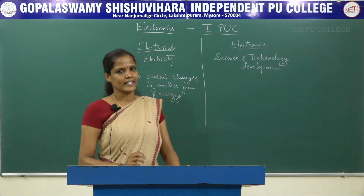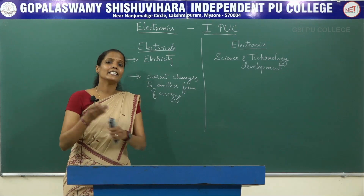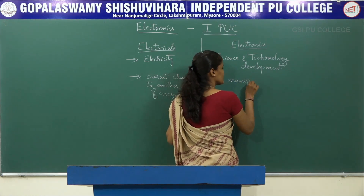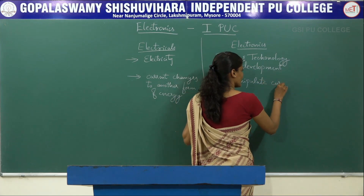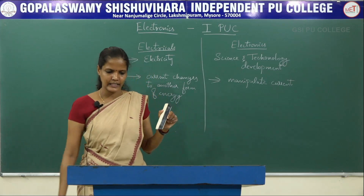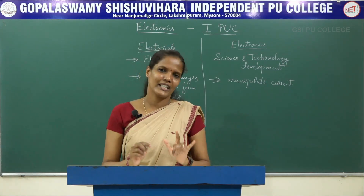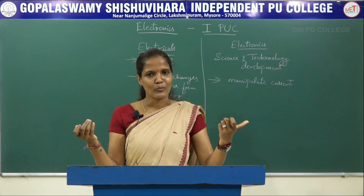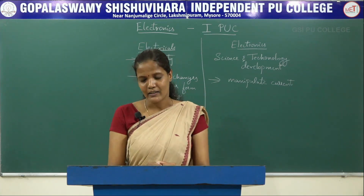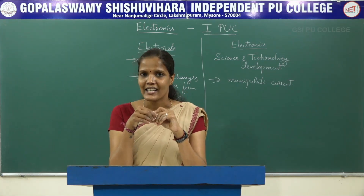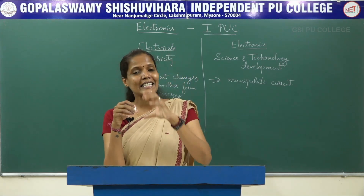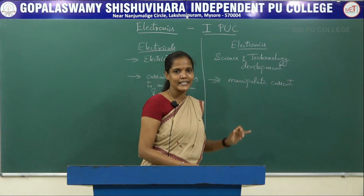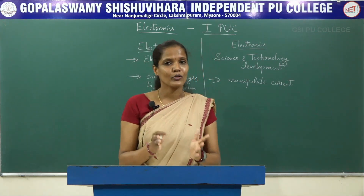Coming to electronics, these devices manipulate current in such a way that it can do a particular task. For example, consider the automatic doors in a mall. As soon as a person stands in front of the door, the door automatically opens and closes by itself. A sensor senses the person standing in front of the door and opens or closes the door automatically — the current is manipulated to perform that particular task.